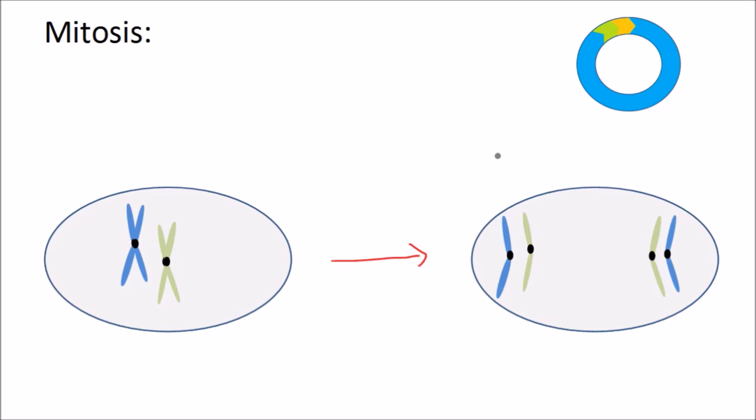And in mitosis, the genetic material splits into two. The copies of the chromosomes are pulled to either end of the cell and form two separate nuclei, each with its own copy of the cell's DNA.